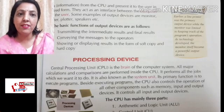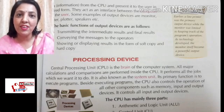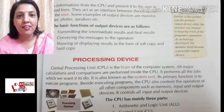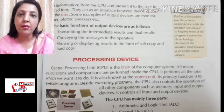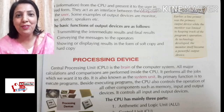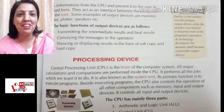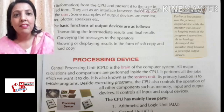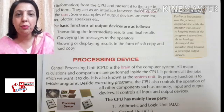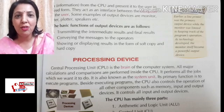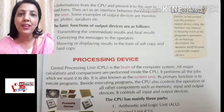Next is the processing device — that is the CPU, or Central Processing Unit. The CPU is basically the brain of the computer. Just like our brain handles all thinking and activities, all the logic and computations for a computer take place in the CPU. That is why it is also called the system unit.